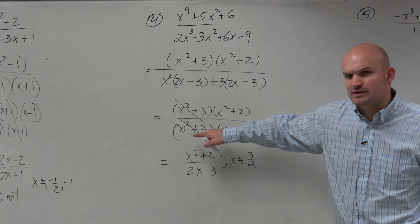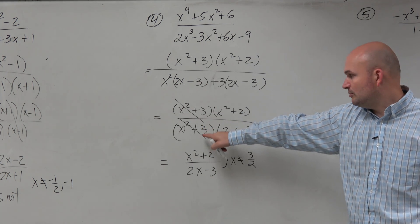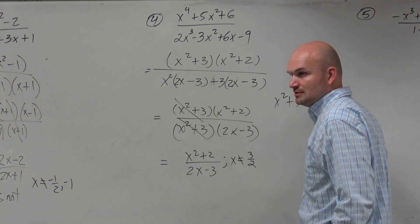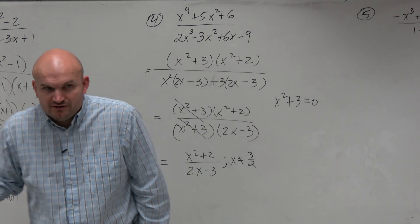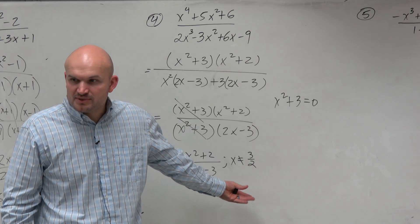But why don't I use this one? Why doesn't this have a restricted value? Not because it got divided out, but what happens when you solve x squared plus 3 equals 0? You'll get i. You're dealing with complex numbers. We're not going to call i a restriction on this domain. It's only for real numbers.